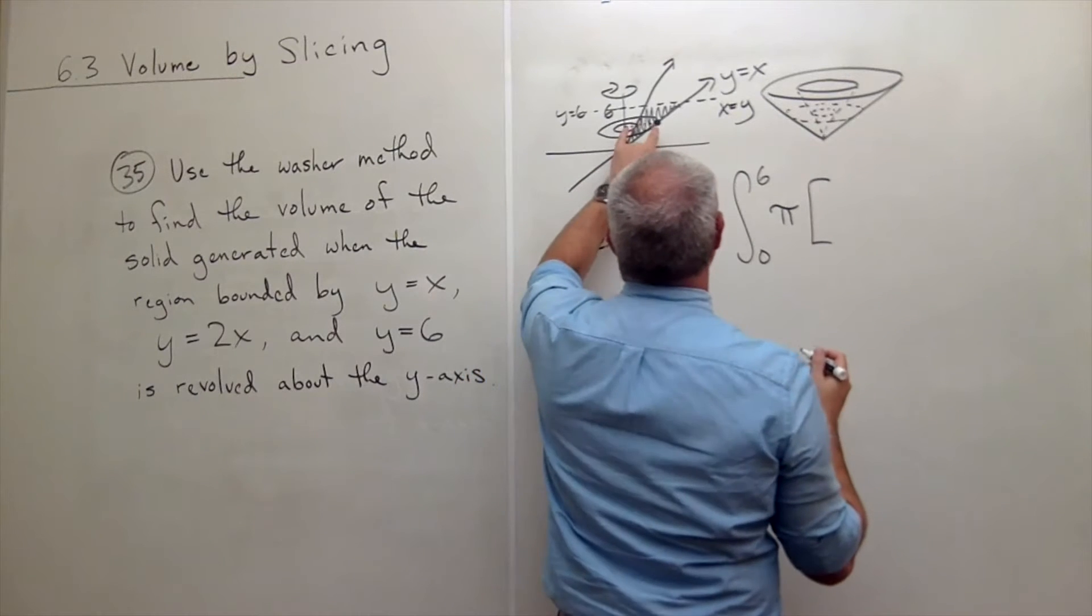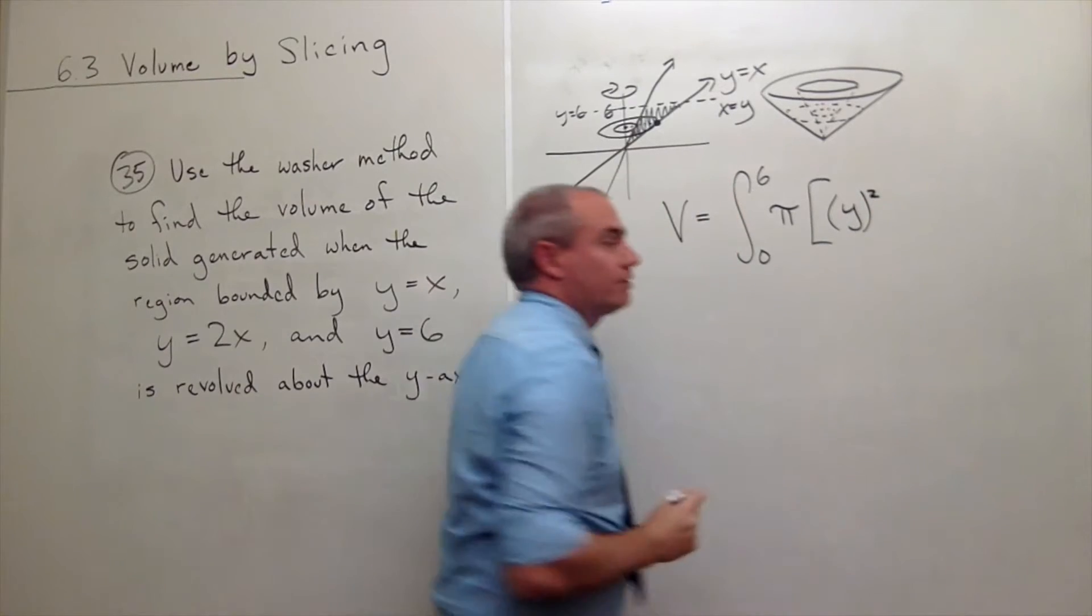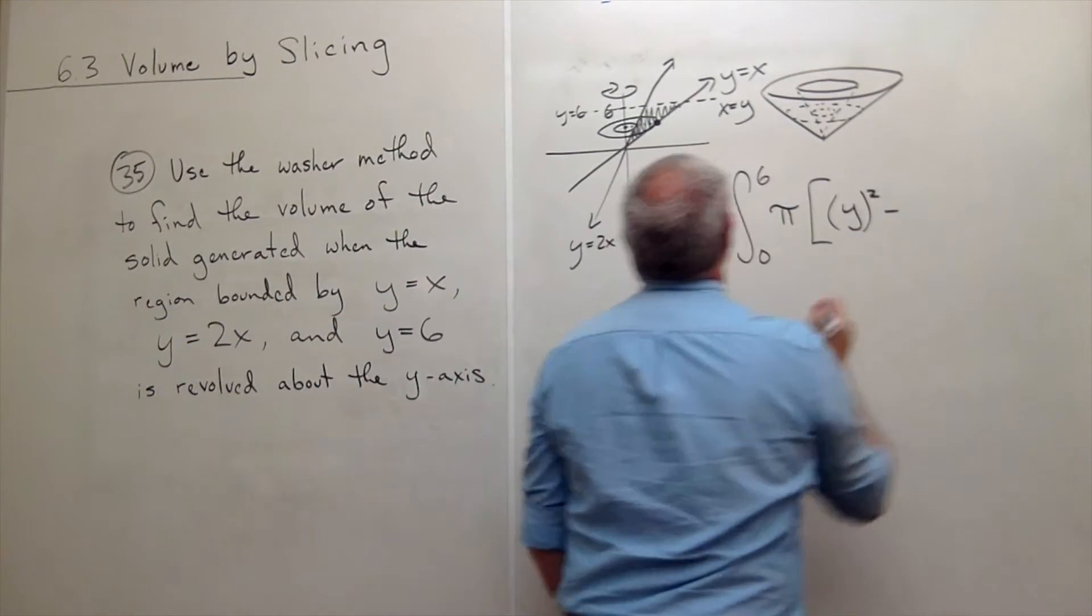I need to think of this as a function of y. But y equals x is the same thing as x equals y. So the outer radius, in this case, is y. But I need to square that.